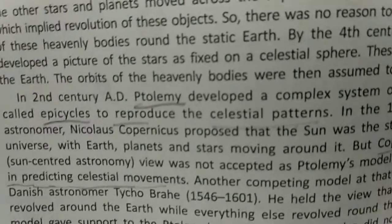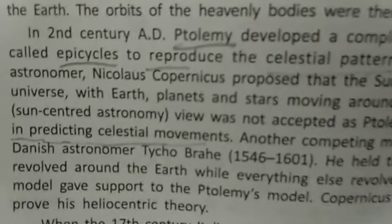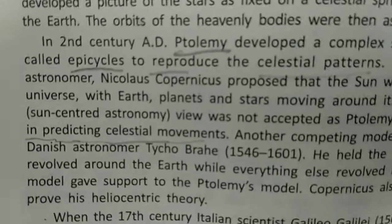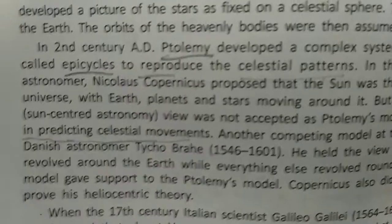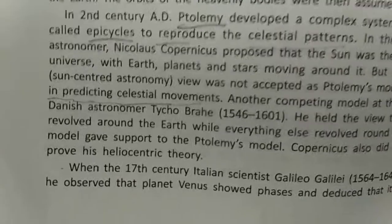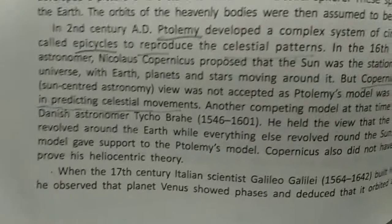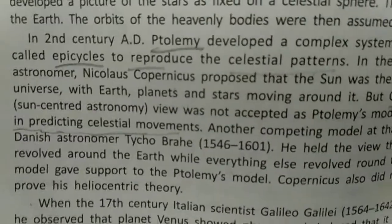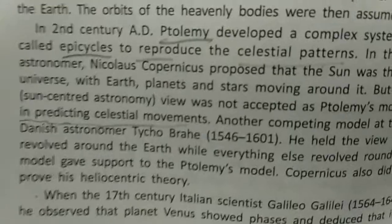A competing model of the same time was brought by the Danish astronomer Tycho Brahe. According to him, the Sun and the Moon revolved around the earth, while the other planets revolved around the Sun. That means the earth is stationary, the Sun moves around the earth, and the other planets move around the Sun — thus his model gave support to Ptolemy's model.